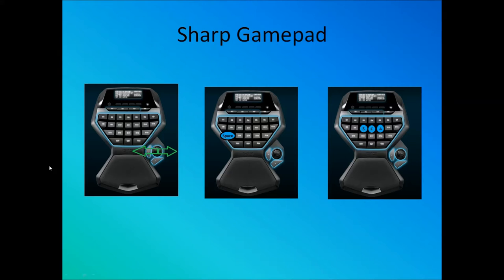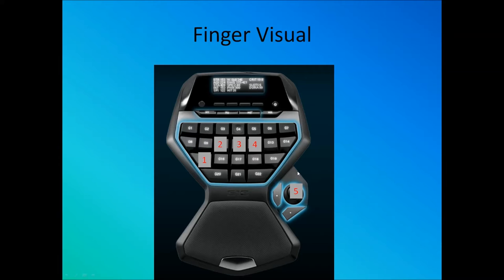All movement is on the thumbpad — going forward, strafing side to side. Your spacebar is assigned to a pinky key; I designated the G15 key as spacebar. You want your thumb on the movement pad, your three fingers in the middle, and whatever your last finger rests on should be your space key. This is where my way is much different: your modifier keys — shift, control, alt — are now right in the middle. Your thumb is on the gamepad, your three fingers are on the three modifier keys, and your pinky is on the space key.